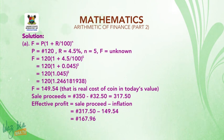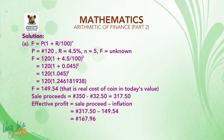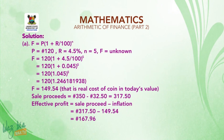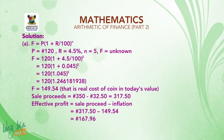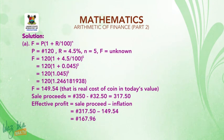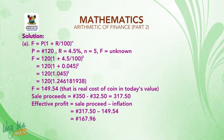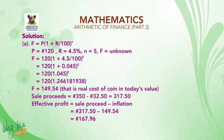Sale proceeds = 350 Naira − 32 Naira 50 kobo = 317 Naira 50 kobo. Effective profit = 317 Naira 50 kobo − 149 Naira 54 kobo = 167 Naira 96 kobo.